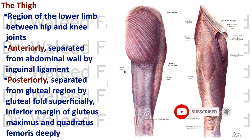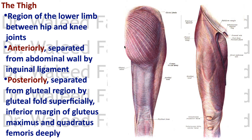The thigh is an area between the hip region and the knee joints. Anteriorly it's separated from the abdominal wall by the inguinal ligament, and posteriorly by the inferior border of the gluteus maximus and the quadratus femoris muscle. The thigh region is between these areas.